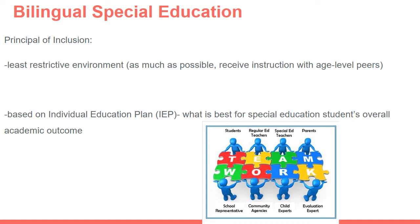Let's talk about bilingual special education policies and procedures. An overarching policy is the principle of inclusion — students are being served with their age-level peers as much as possible. This is called the least restrictive environment. Students receiving special education services are educated and included in regular instruction with their age-level peers as much as possible. The level of inclusion is based on the student's Individual Education Plan (IEP), a specialized plan made by administrators, teachers, parents, and community members to help determine what's best for that particular student's overall academic success.